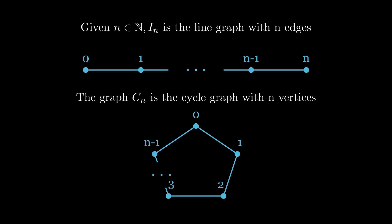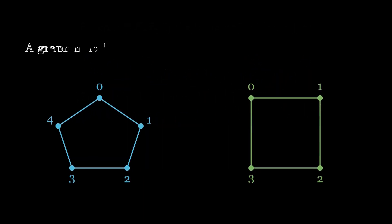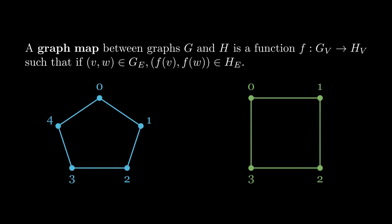Now that we know what we mean when we say a graph, the next step is to talk about what the maps are between graphs. So for us, given two graphs, G and H, a map between them, or a graph map between them, is a function on the vertex sets. So it goes from GV to HV, such that it sends edges to edges.